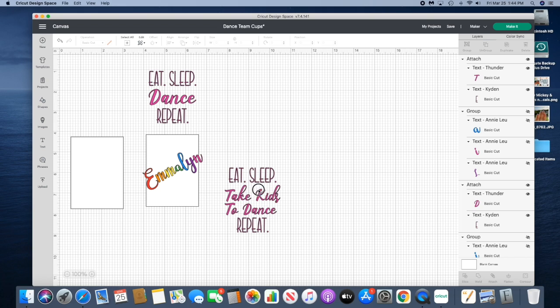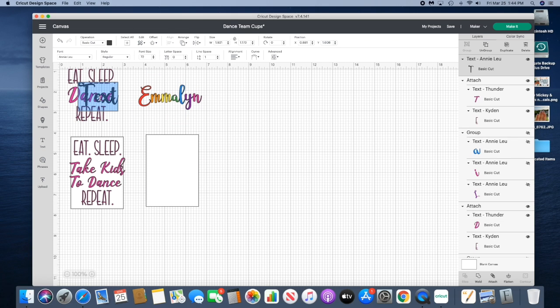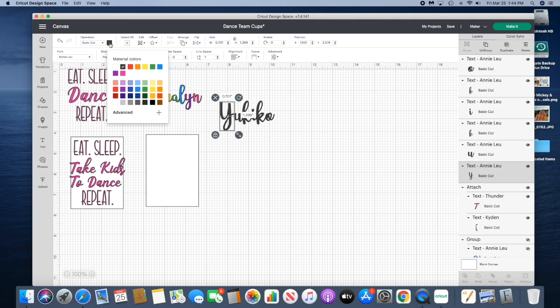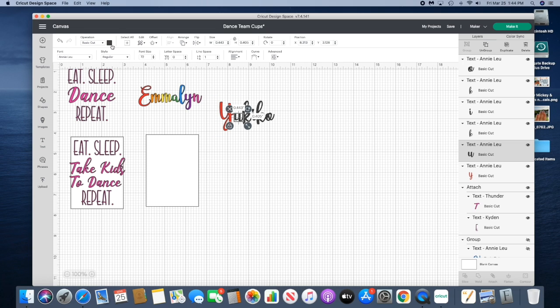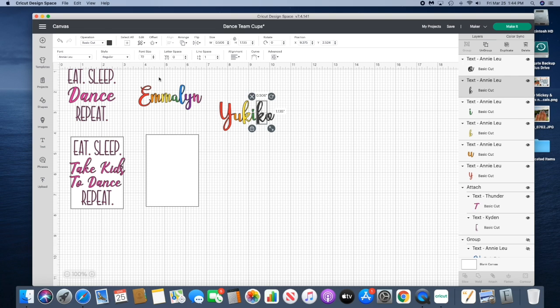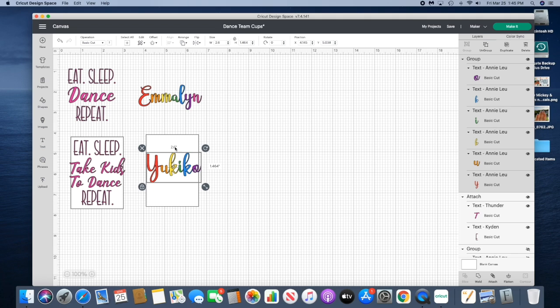For the name we're just gonna go to text and my friend's name is Yukiko and this is in the Annie Leuv font. So we're just gonna ungroup and that way you can move the letters around and then we're just gonna color them in rainbow order. And I like to make sure I'm only using colors on that second row. When you're doing a lot it can be confusing, so as long as you make or select the same colors, you don't want to be selecting two different blues because then they're gonna be put on two different blue mats.